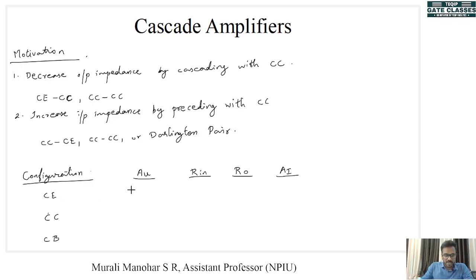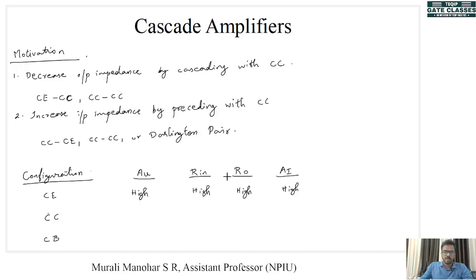For the common emitter configuration, voltage gain is high, input impedance is also high, output impedance is high, and current gain is also high. We already know it is a better voltage as well as current amplifier. But since the output impedance is high, this is a problem — we will need suitable buffers at the output in common emitter configuration.